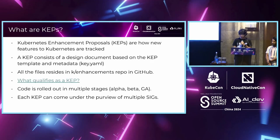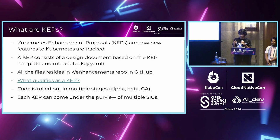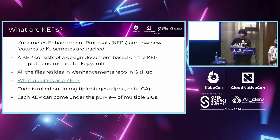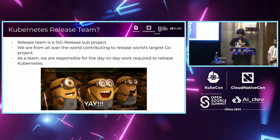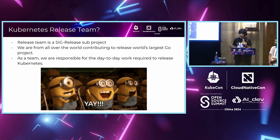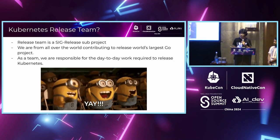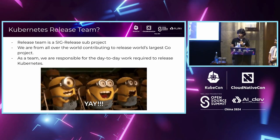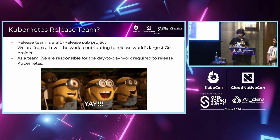All KEPs reside in the Kubernetes/enhancements repository on GitHub. Each KEP for a feature has a design document as well as a KEP.yaml file with metadata about which SIG the KEP comes under. The release team coordinates the release of a Kubernetes version every three months, and the enhancement sub-team uses KEPs to track which new features are going into each release.